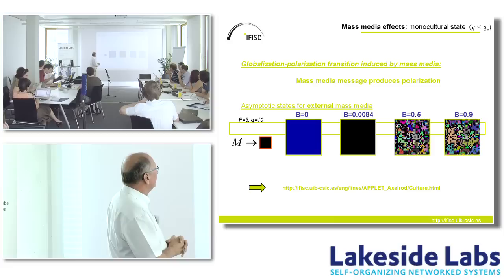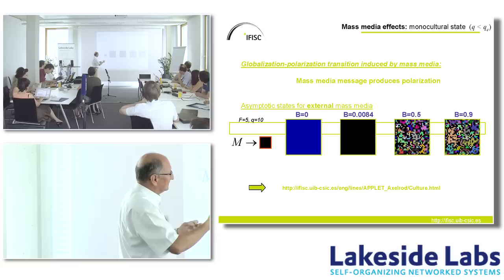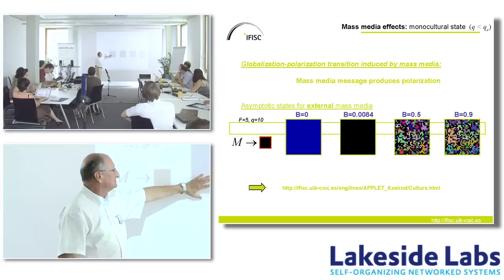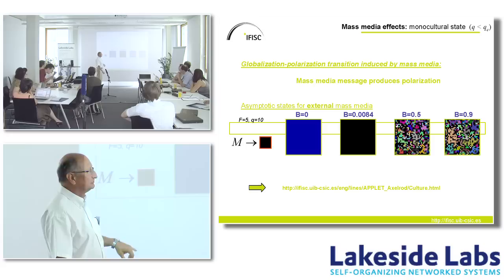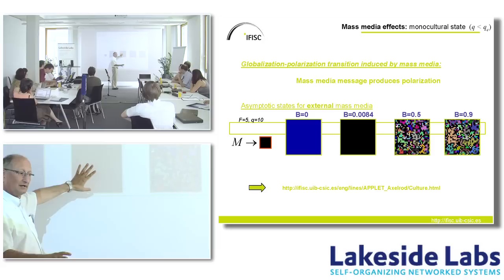Imagine that parameter B is the strength of the message — how probable it is you will get in touch with it. Consider a situation in which, absent this message, the system converges to a blue state, but the message is black. What I'll show is that if the message is strong, it will produce polarization. If the message is weak, it will take the system to converge to the message.